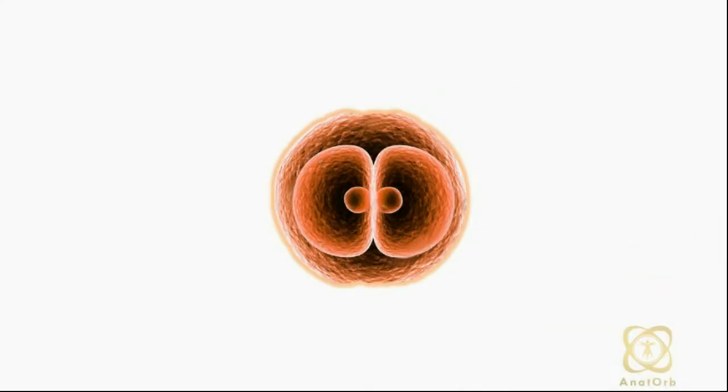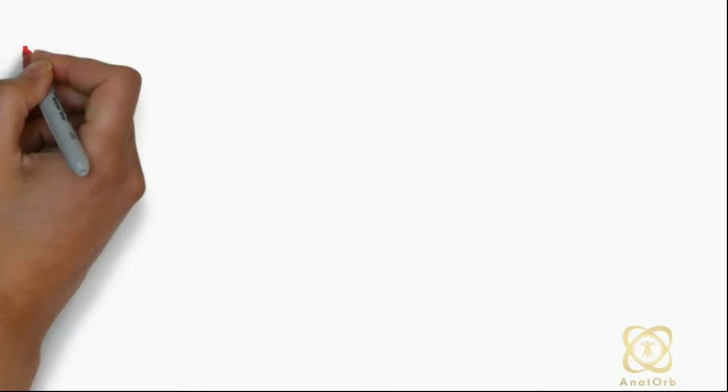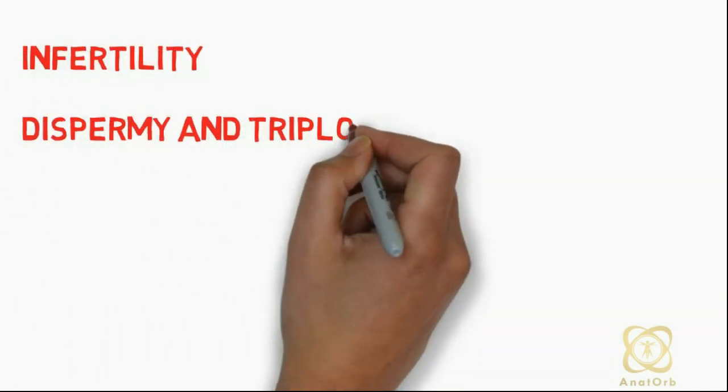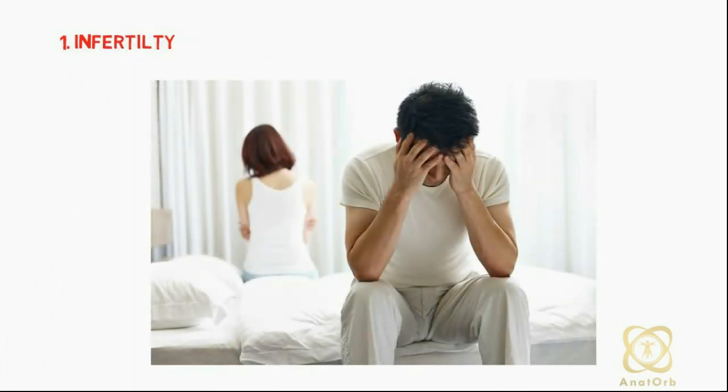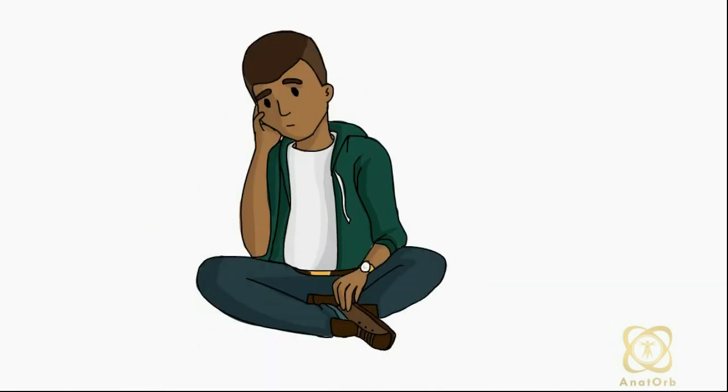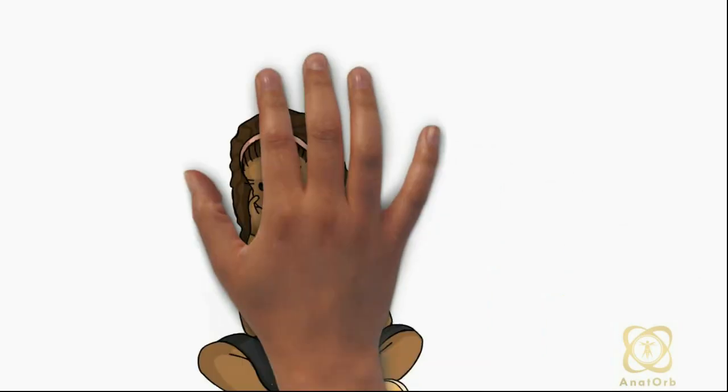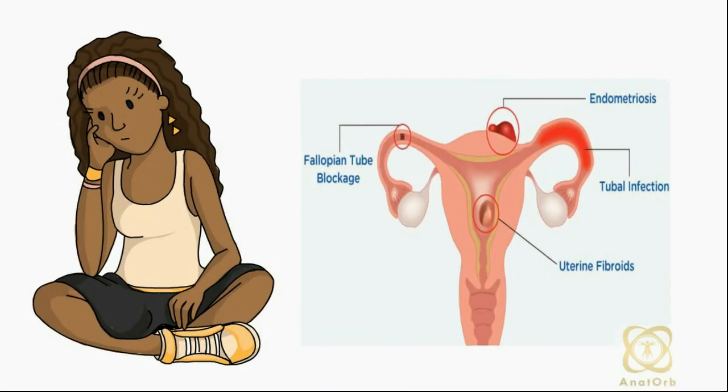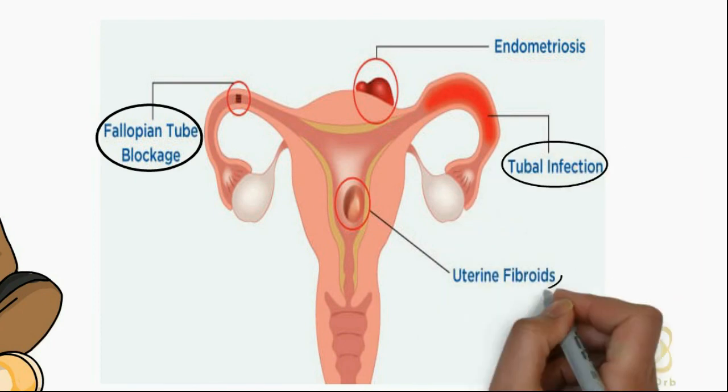Some clinical correlates associated with fertilization include infertility, dispermia, and triploidy. Infertility is a problem affecting about 15% to 30% of couples. Males with less than 20 million sperm per milliliter per total ejaculate are more likely to be infertile. In women, infertility may be due to fallopian tube blockage, tubal infection, and uterine fibroids, among others.